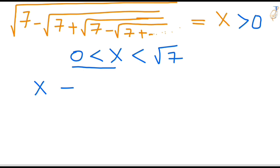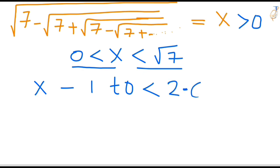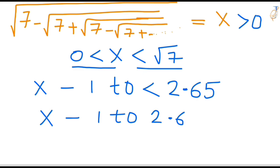That means the X value lies in between: X is more than 0 and less than root 7. The value of root 7 is approximately equal to 2.65. So our X value lies in between 1 to 2.64. But we don't know the exact value — we need to find that.